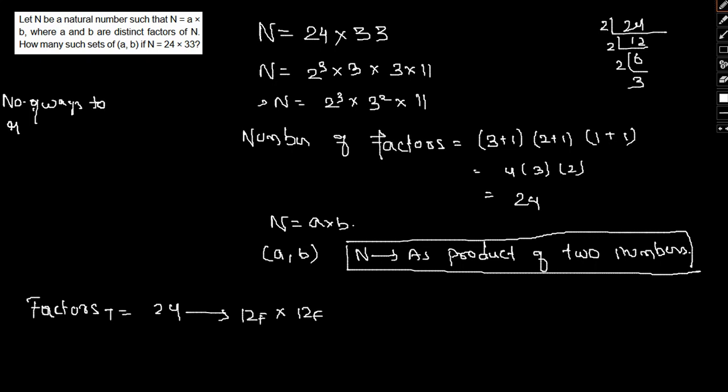The number of ways to represent a number as a product of two numbers can be given as the number of factors divided by 2.